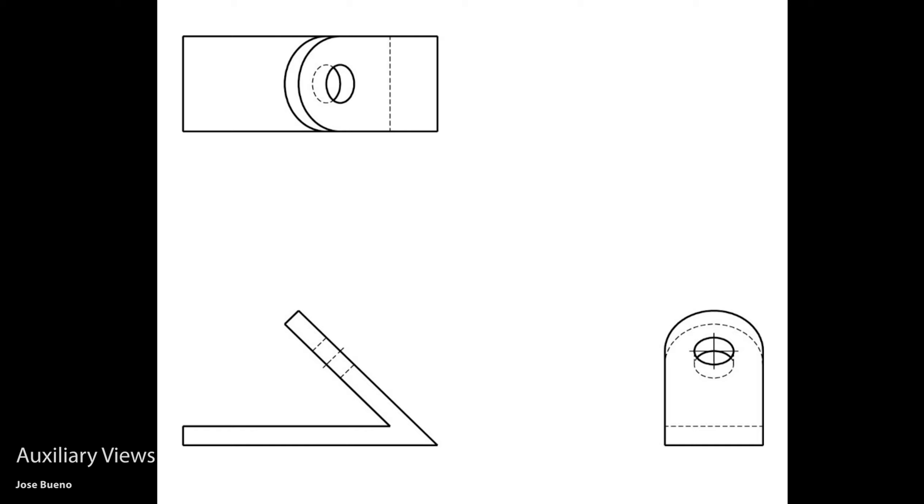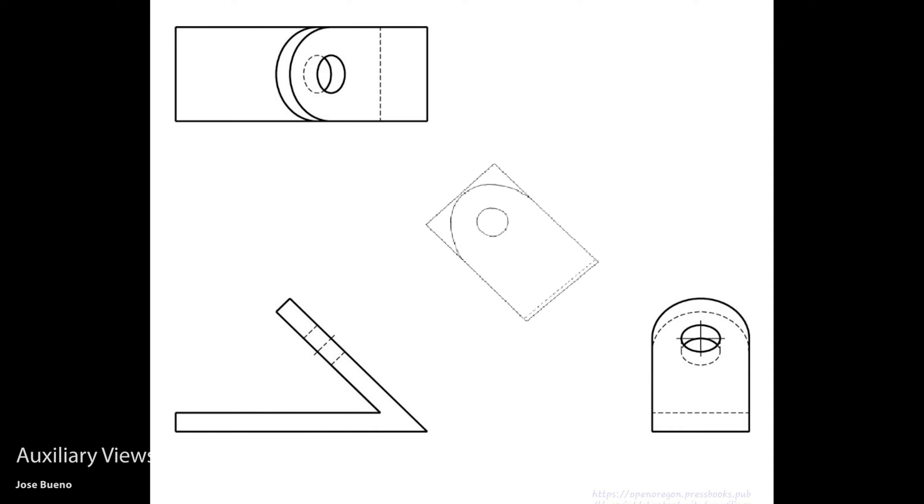This is where we would use an auxiliary view to give us a better picture of what this face looks like. So again, this is a part with a slanted or an angled face that cannot be represented accurately using an orthographic view and an isometric view. So if we look at what an auxiliary view would look for this, it's going to look something like this. And when I pasted this in here, it looked a little fuzzy. But don't worry, I actually made the part in the shop. So let's go ahead and take a look at that.